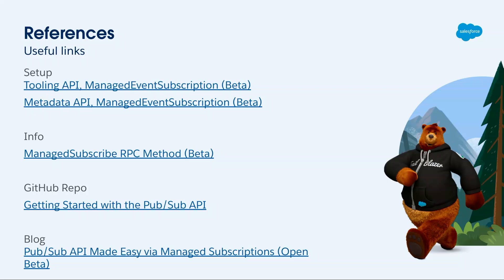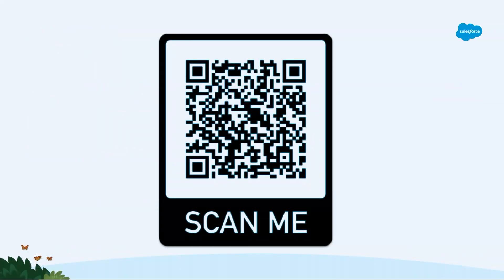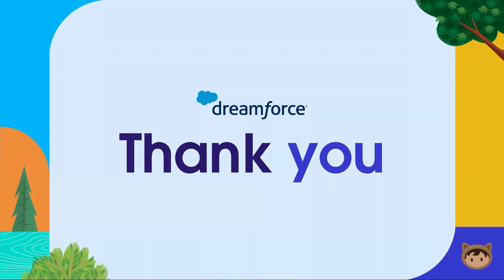A couple of resources — I'll flash up a QR code. There's the Tooling API and metadata API documentation on managed event subscriptions if you want to understand the metadata and parameters in more detail. There's more information on managed event subscriptions as a whole, covering nuances and limitations you'll want to know when building. There's a GitHub repo to get started quickly with Golang, Java, and Python examples. And there's Nia's blog explaining all of this in much more detail than I could in 20 minutes — I'd absolutely advocate you go read it. Scan the QR code to get a Google Doc with all links clickable.